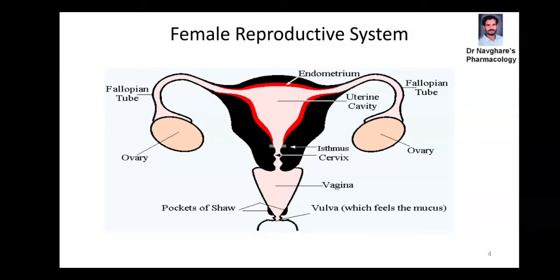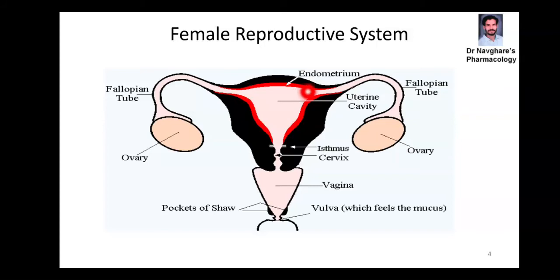Now, the female reproductive system. This is a schematic diagram of the female reproductive system, starting with the external component — the vulva — then the vagina, then the opening of the uterus called the cervix, then the uterus. The uterine wall has three layers; the most outer one is called the endometrium, also called the endometrial lining. Then the fallopian tube, and the ovary. There is one pair of ovaries in the female reproductive system.